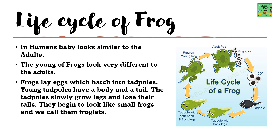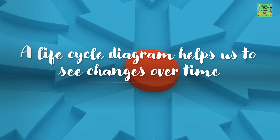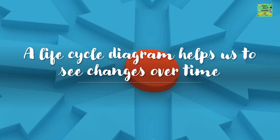Frogs lay eggs which hatch into tadpoles. Young tadpoles have a body and a tail. Tadpoles slowly grow legs and lose their tails. They begin to look like small frogs and we call them froglets. A life cycle diagram helps us to see changes over time.